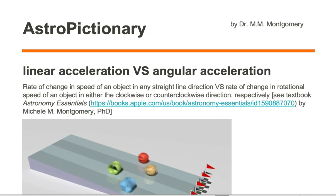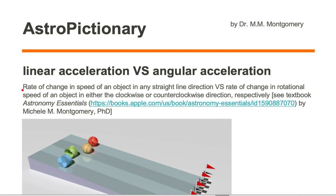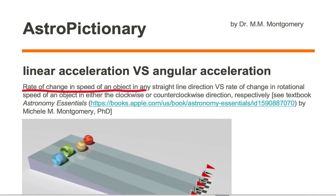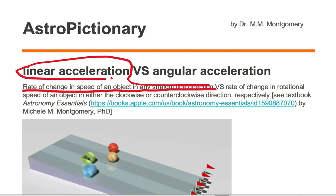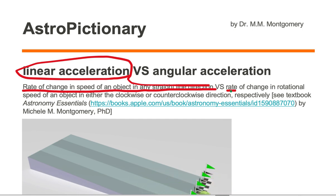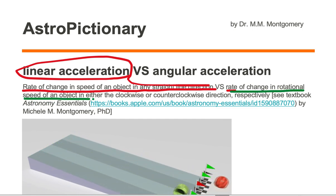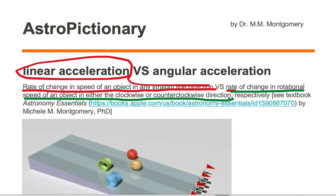Let's take a look at linear acceleration versus angular acceleration. Linear acceleration is the rate of change in speed of an object in any straight line direction, and angular acceleration is the rate of change in rotational speed of an object in either the clockwise or counterclockwise direction.